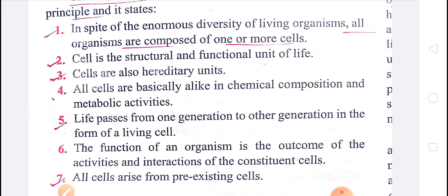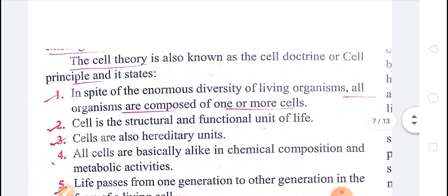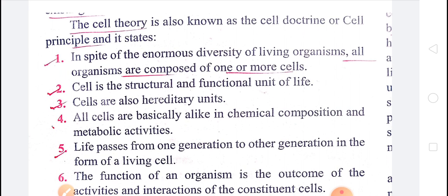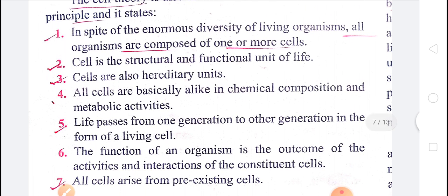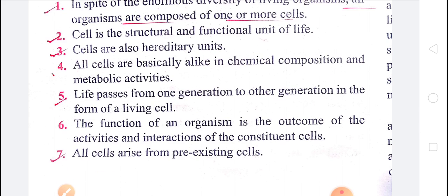In conclusion, the cell theory was given by Schwann and Schleiden. Later, Rudolf Virchow also added some points. Cell theory states: all organisms are composed of one or more cells; cell is the structural and functional unit of life; cells also have hereditary units; and all cells arise from pre-existing cells.